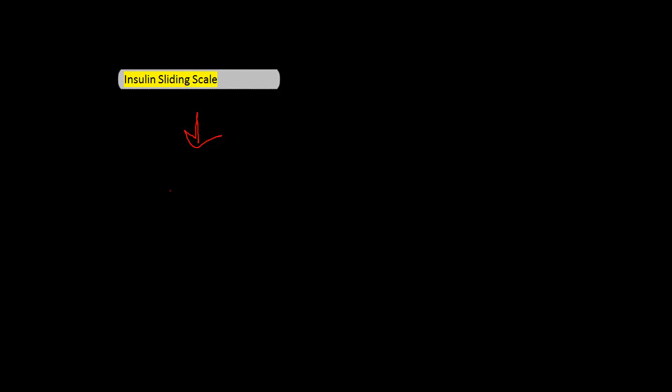The insulin sliding scale is one of those things you'll hear people talk about on the wards and kind of assume that you know, but never actually explain to you. To sum up the sliding scale in one sentence, it's basically the hospital's attempt to figure out how much insulin needs to be given to a patient for a given blood glucose level.